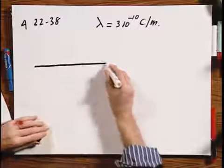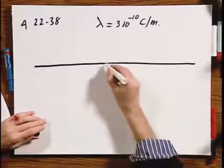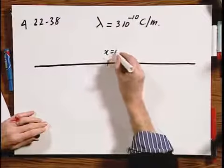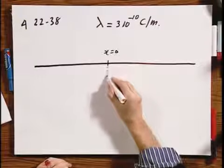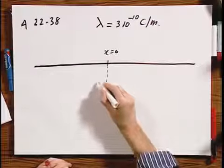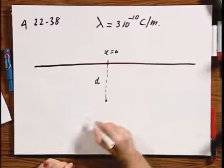Here is this long wire. Here is x equals zero. And I'm asking you a question which is not asked by your teachers, but I want to do that first, and then you'll see that the rest comes out very easily. And that question is, what is the electric field at a location d anywhere away from the wire?